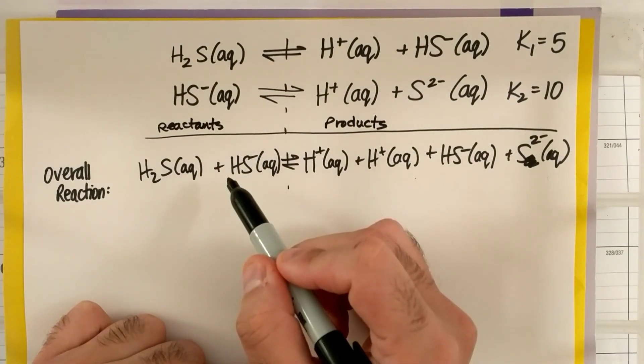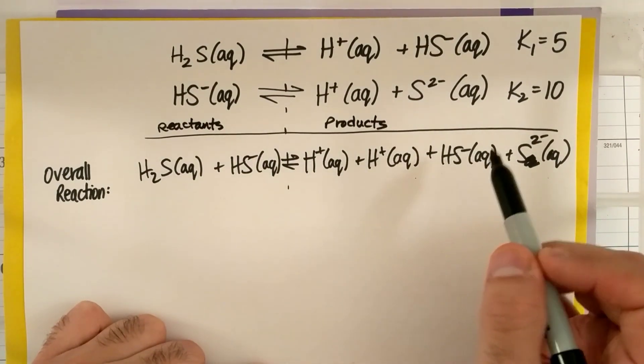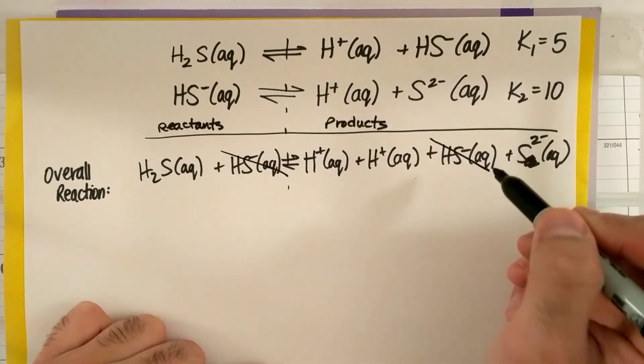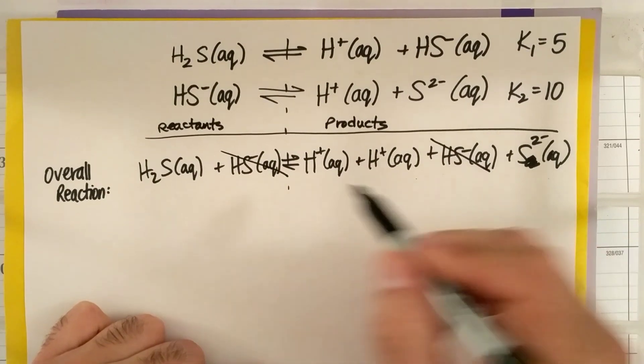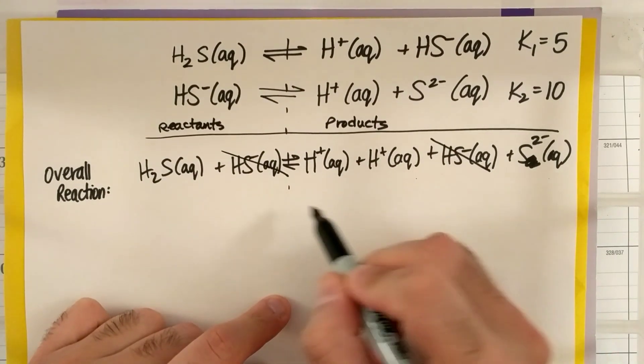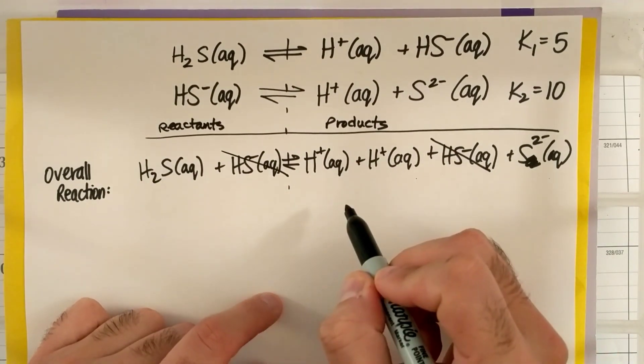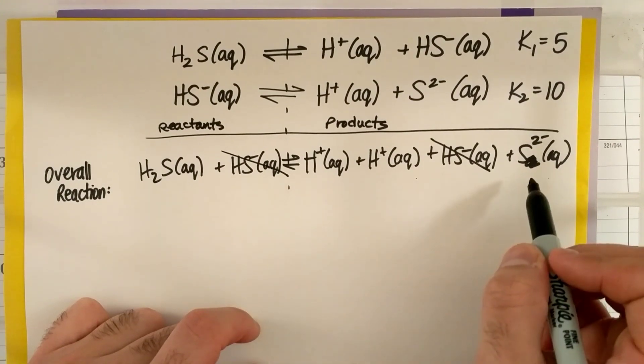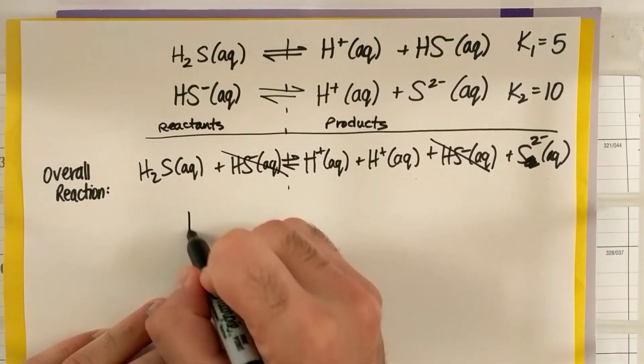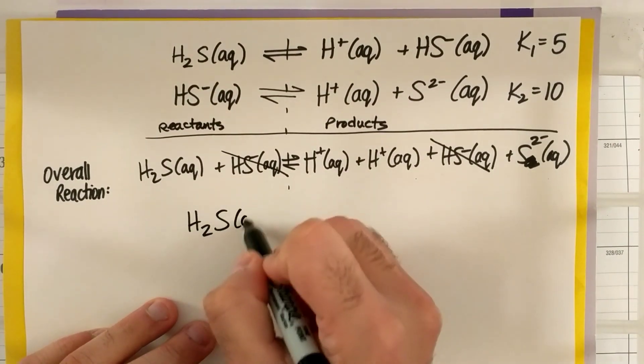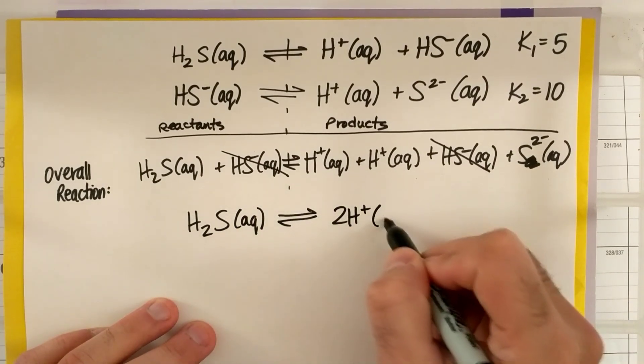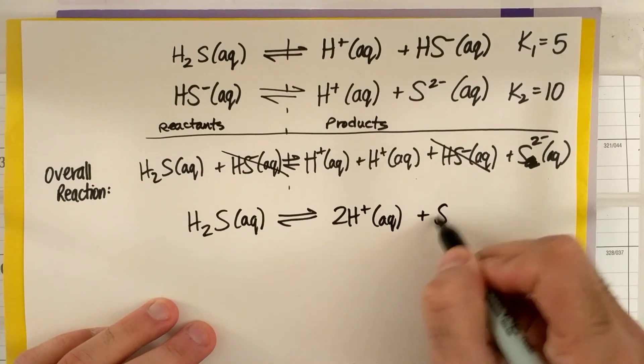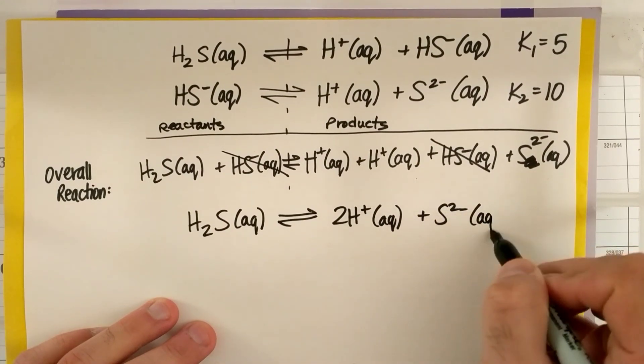So I have an HS minus on the left side, and I have an HS minus on the right side, so I'm going to cancel those out. They both show up on both sides, so they ain't doing anything. It also looks like I have two H pluses on the right side, so I'm just going to combine those and I have an S2 minus. So in general, I'll have H2S aqueous in equilibrium with two H plus aqueous plus S2 minus aqueous.